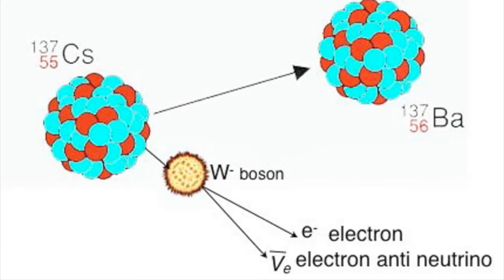There is in fact a brief intermediate stage. It is a W-minus boson that is emitted from the neutron, which in turn splits into the electron and anti-neutrino.